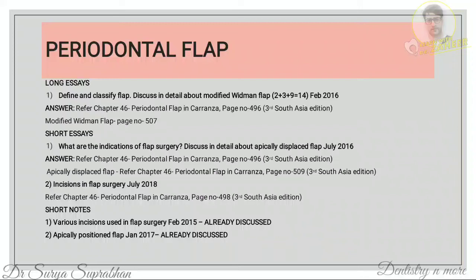For the short essay on indications of flap surgery and apically displaced flap, refer to chapter 46, Periodontal Flap. The first page lists eight indications of flap surgery. For apically displaced flap, give a brief introduction, write the five procedural steps, and include a diagram. For incisions in flap surgery, refer to page 498 — there are two main types: horizontal and vertical. Horizontal can be further divided into internal bevel incision and crevicular incision, with two to three lines about each.